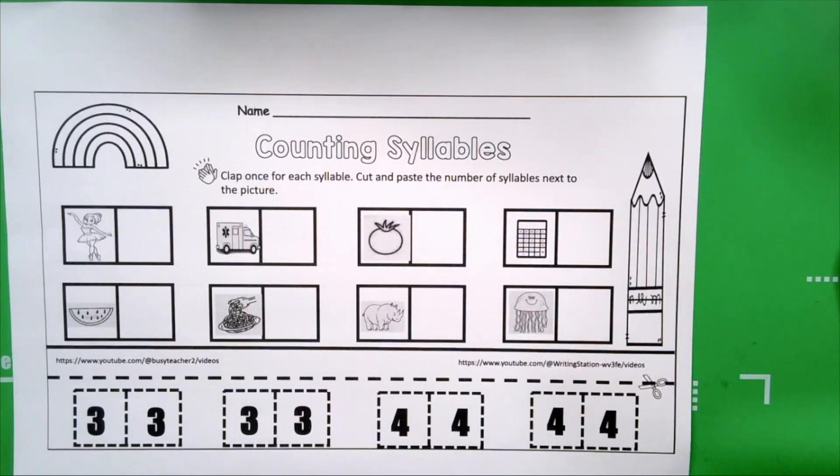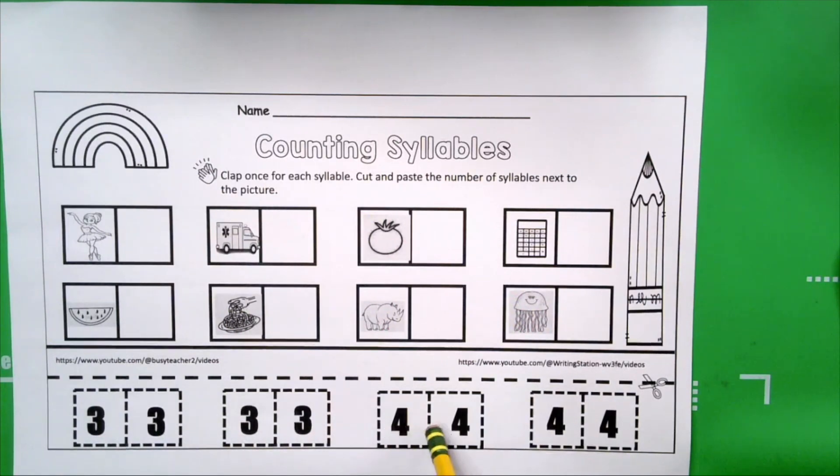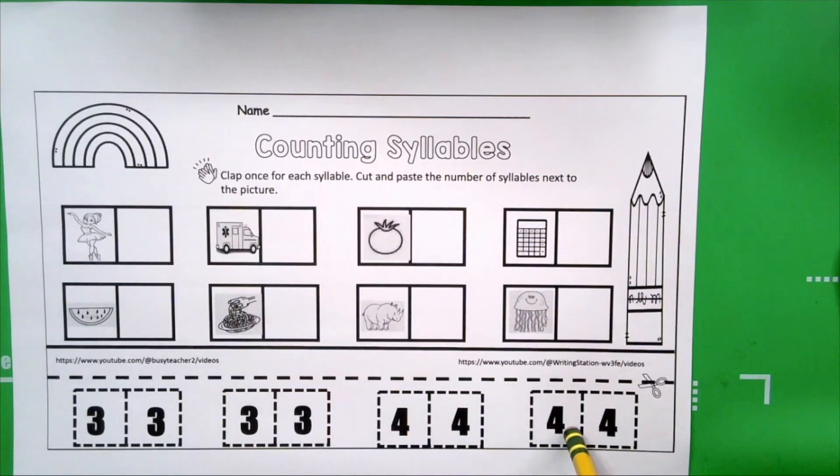This time boys and girls, have you noticed, look at the numbers. One is gone, two is gone, and our syllables. This is our syllable challenge. Three and four syllables is what we have. So you're going to have to clap and listen carefully.